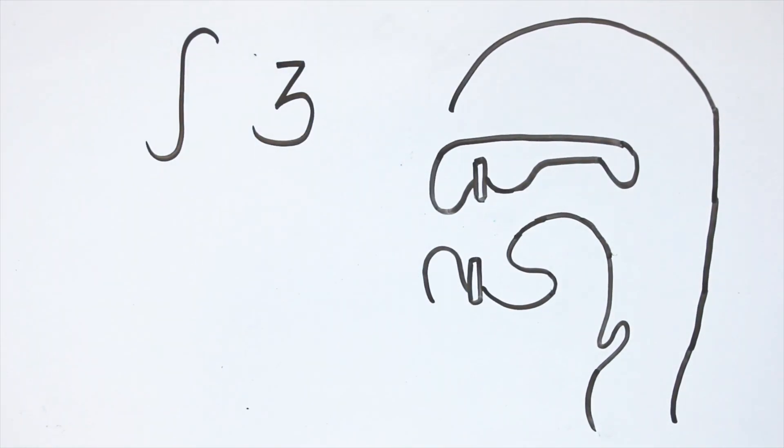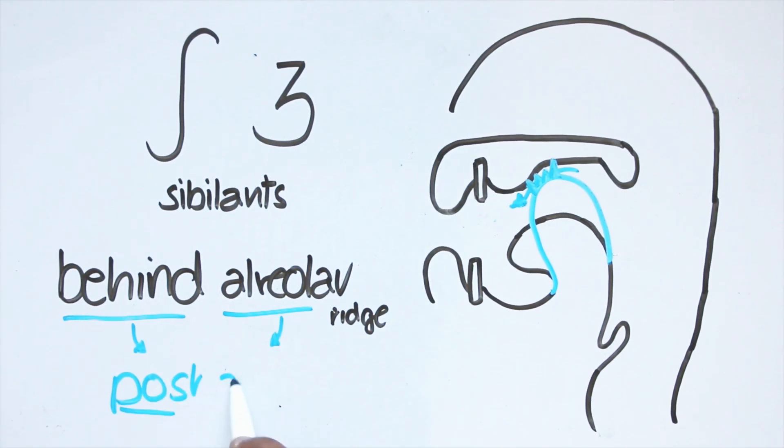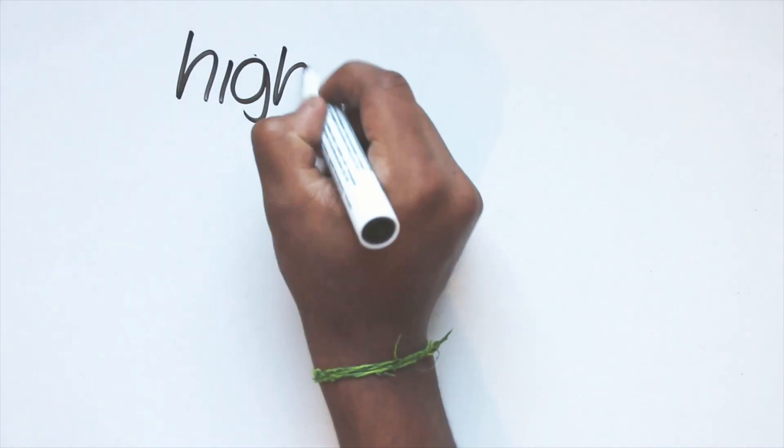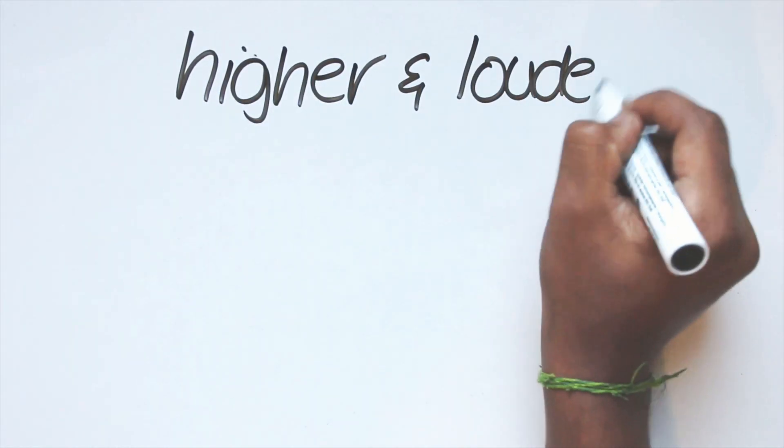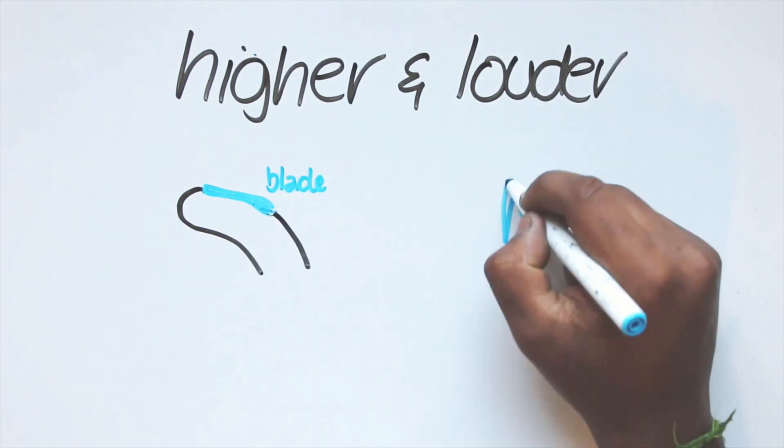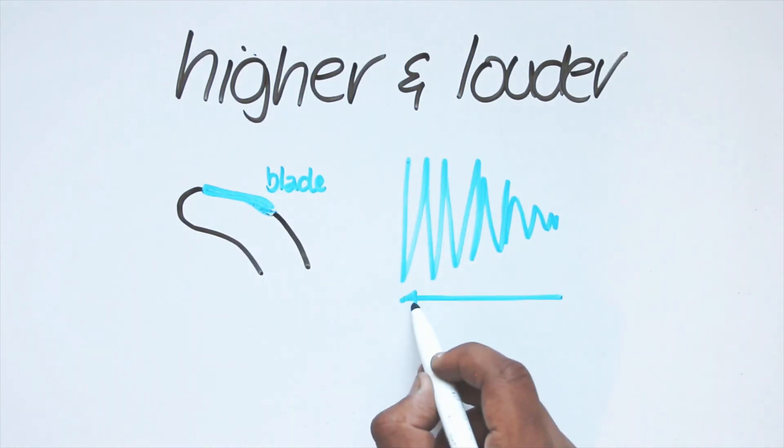ʃ and ʒ are sibilants too, and they also have special letters for them. They are pronounced with the tongue domed behind the alveolar ridge, so they can be called post-alveolar. ʃ is voiceless, and ʒ is voiced. Sibilants are much more high-pitched and loud than other fricatives, since the blade of the tongue constricts the airflow more for longer and causes more friction, whether that be on the alveolar ridge or behind it.